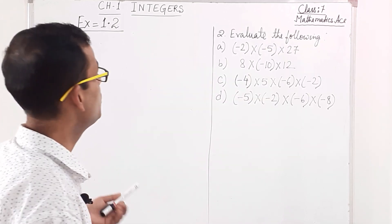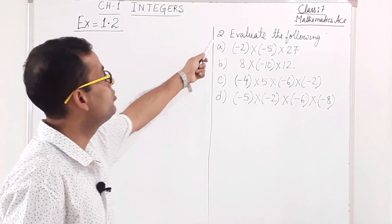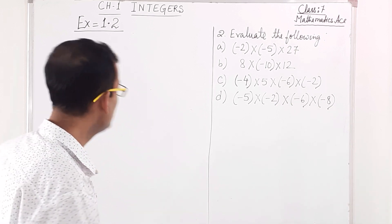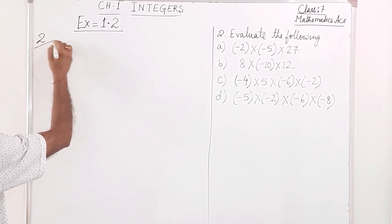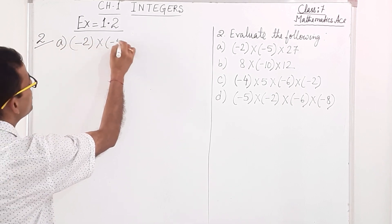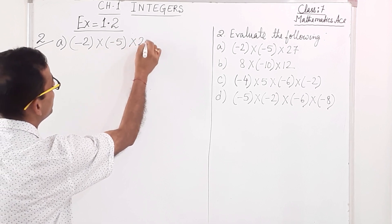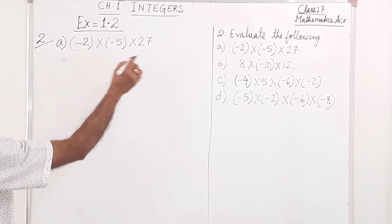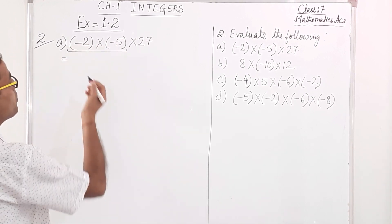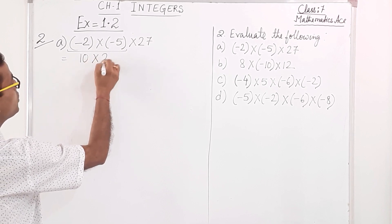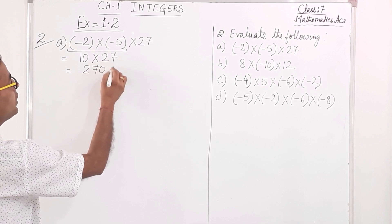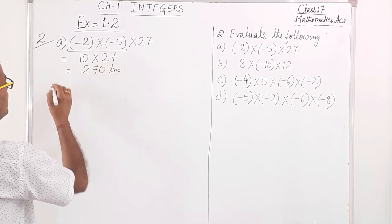Now we will move on to question number 2: evaluate the following. There are 4 sums: A, B, C, D. Number 2A: minus 2 into minus 5 into 27. There are 3 integers, so first we do the first two. Minus into minus — same sign — gives positive 10. Then 10 into 27 equals 270.